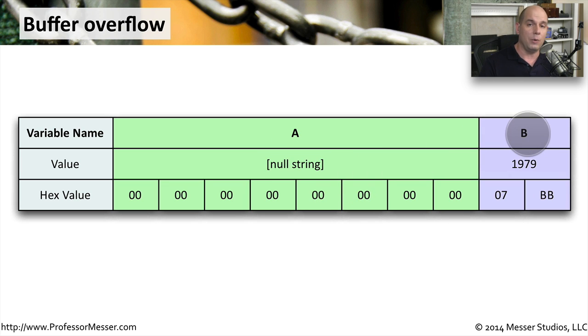Variable B, however, does have information in memory. It has the number 1979 in decimal, which in hexadecimal is 07BB.